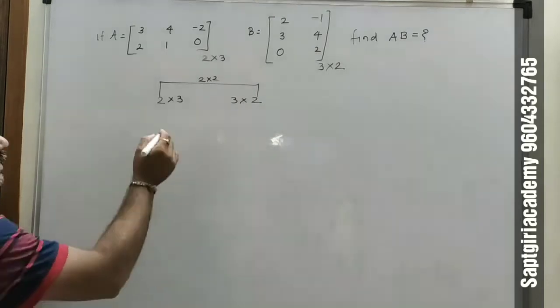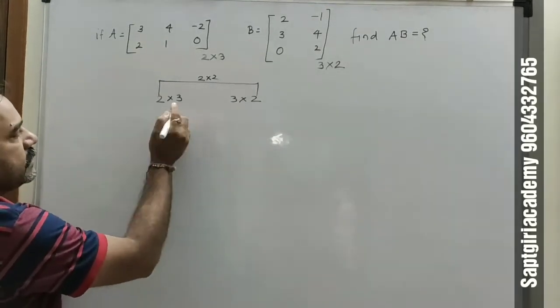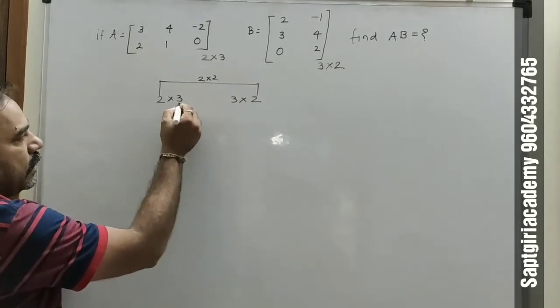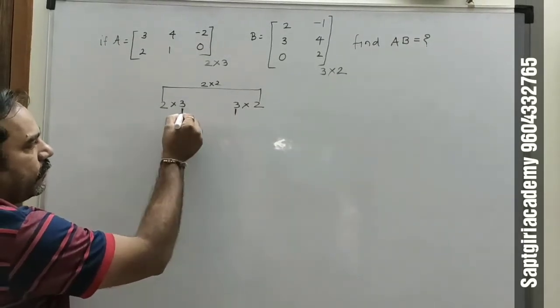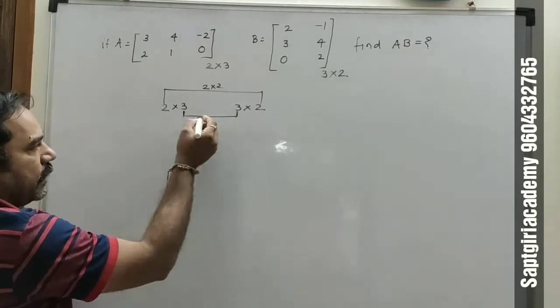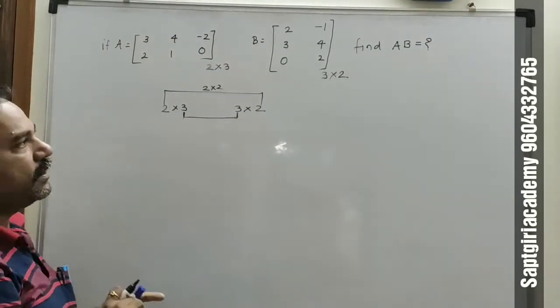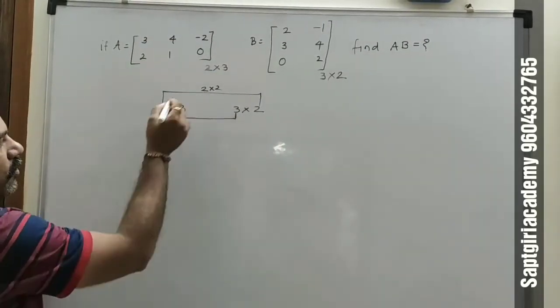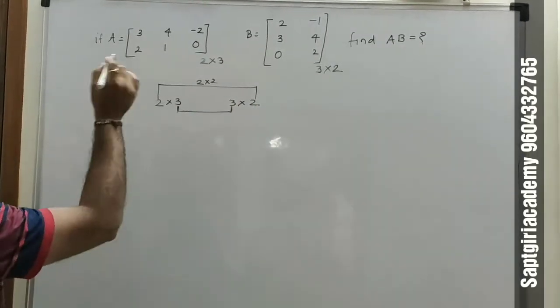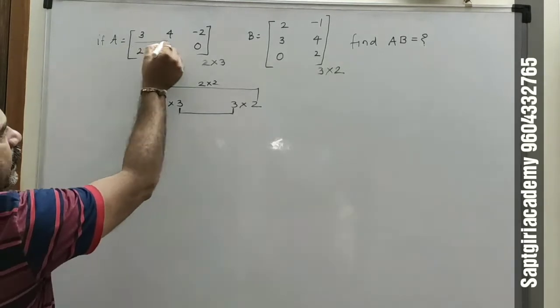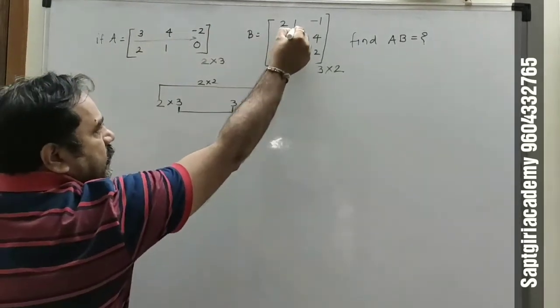The first matrix's number of columns must equal the second matrix's number of rows. Then the product has order 2 by 2. We will multiply matrix A by matrix B.